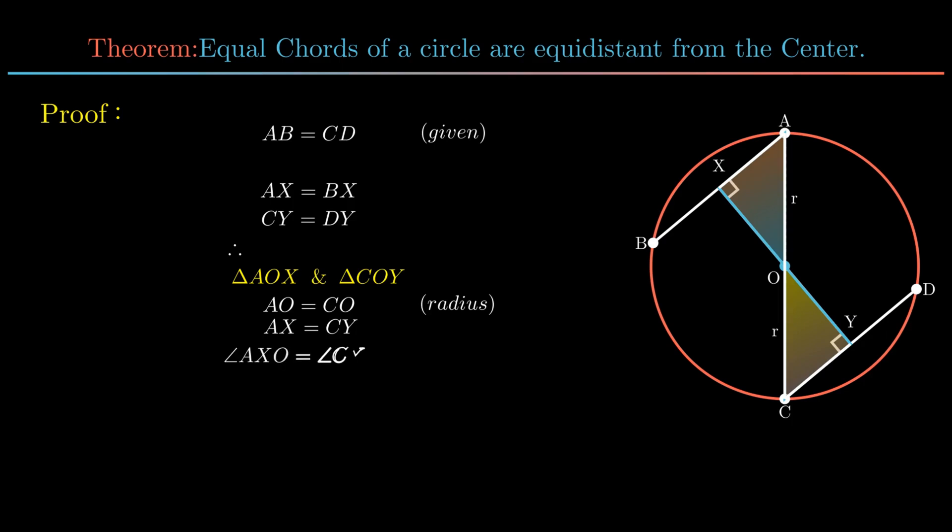Angle AXO is equal to angle CYO each 90 degrees from construction. By SAS rule triangle AOX is congruent to triangle COY. By CPCT we conclude OX is equal to OY hence the theorem is proved. This was it for the video.